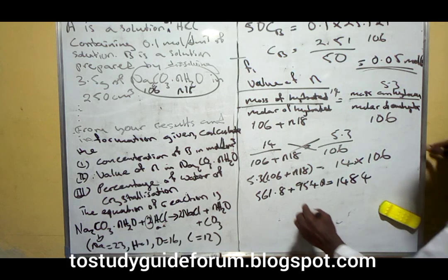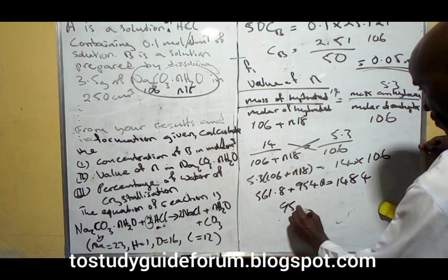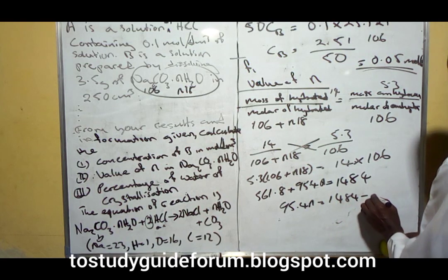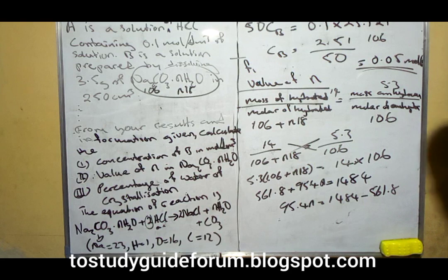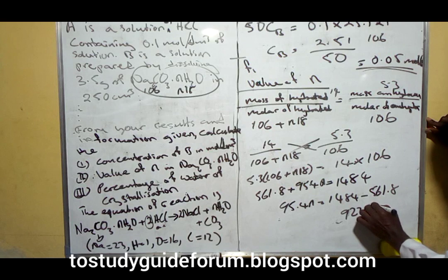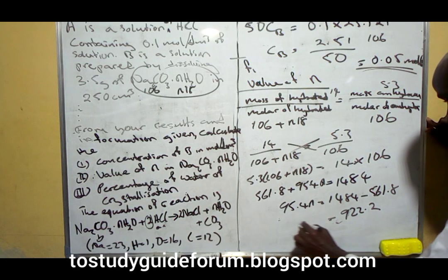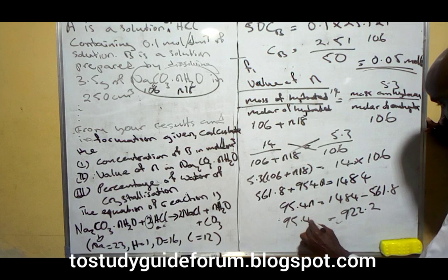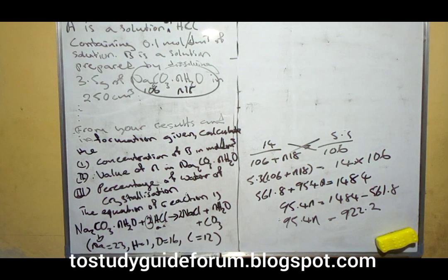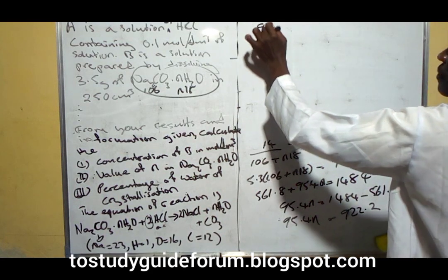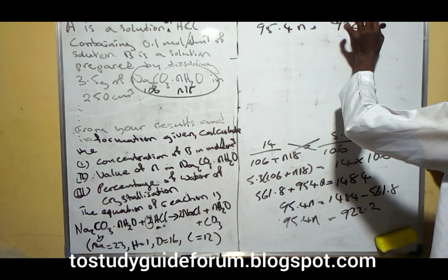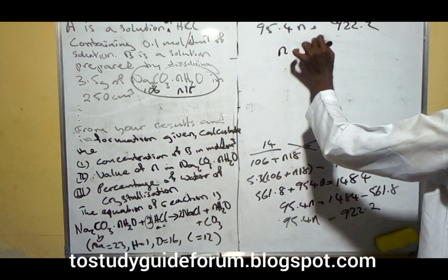This gives us 561.8 plus 95.4n equals 1484. When we subtract, we have 95.4n equals 1484 minus 561.8.